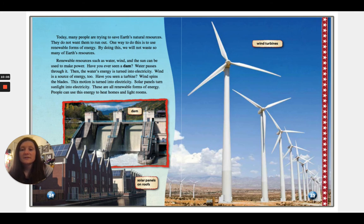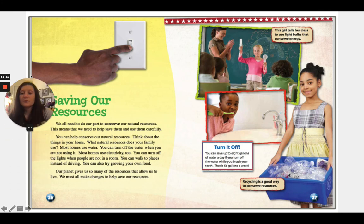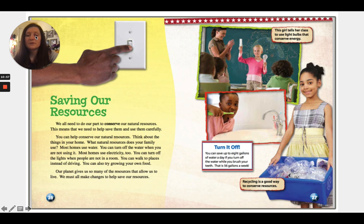Today many people are trying to save earth's natural resources so they do not run out. One way is to use renewable forms of energy — by doing this we will not waste so many of earth's resources. Renewable resources such as water, wind, and the sun can be used to make power. Have you ever seen a dam? Water passes through it and the water's energy is turned into electricity. Wind is a source of energy too — have you seen a turbine? Wind spins the blades and that motion is turned into electricity. Solar panels turn sunlight into electricity. These are all renewable forms of energy that people can use to heat homes and light rooms.